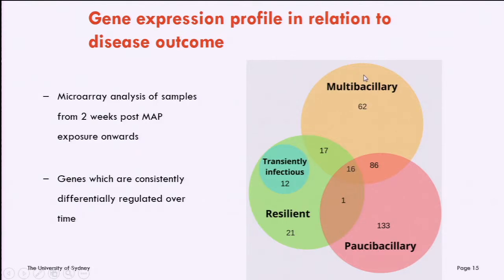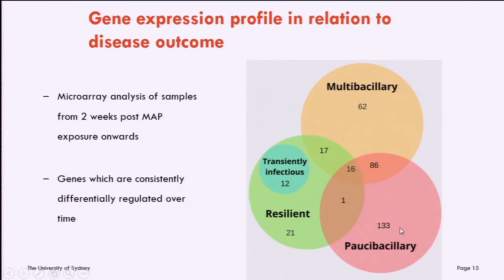Another arm of this work is looking at gene expression changes in these animals. These results are from the two and a half year trial, where we took blood samples from two weeks until two and a half years after exposure, and carried out microarray analysis on a subset of animals. We looked for genes consistently up or down regulated at every time point. We find sets of genes present in diseased animals — combining multibacillary and paucibacillary as one diseased group. Very importantly, there is a group of genes that seem to be differentially regulated in the resilient animals, suggesting real potential for future work.